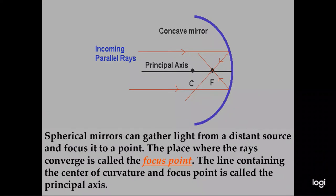The rays converge at the focus point F. The distance from F to the vertex of the mirror is half the radius of the circle. So the focal length equals R over 2 for a concave mirror.